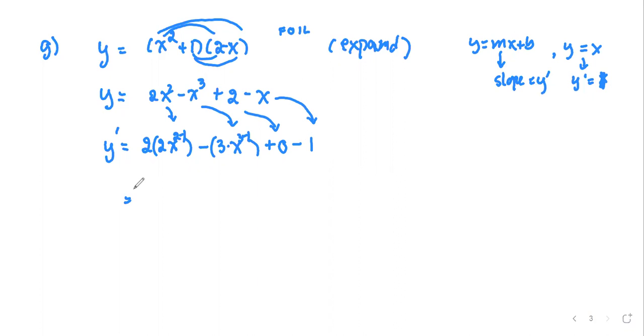Now what we can do more is simplify. Two times two, that's four x to the power two minus one becomes x to the first power, minus three times x to the second, omit zero, and then minus one.